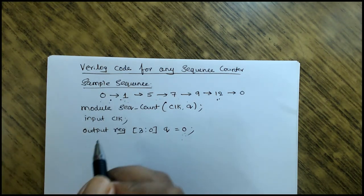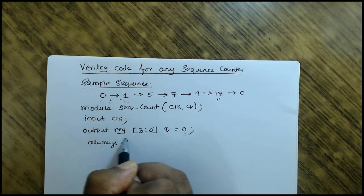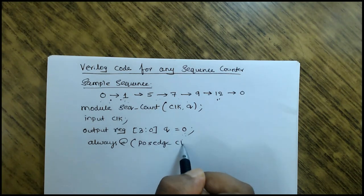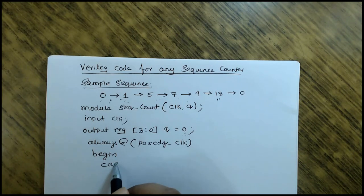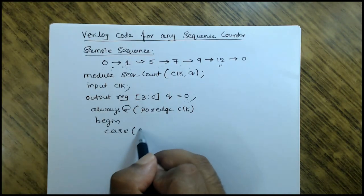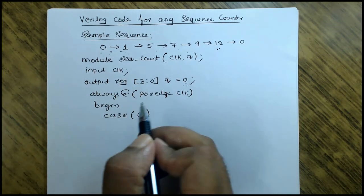Here 0 is there, I'm taking it as 0. Now, always at posedge of clock, posedge of clock, begin. Case - what should be the case here? Case is Q itself.